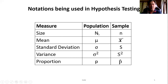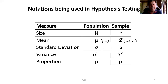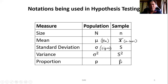Regarding size: if it is population, we use capital N; if it is sample, we use small n. For mean: if it is population mean, we use the notation mu (μ); for sample mean, we use x-bar. For standard deviation, we use the symbol sigma (σ); and sample standard deviation is s. Variance is the square of standard deviation, so it becomes sigma-squared (σ²) for population and s-squared for sample. If it is proportion, we use small p; and if it is sample proportion, we use p-cap or p-hat. These are the notations and symbols used in hypothesis testing.